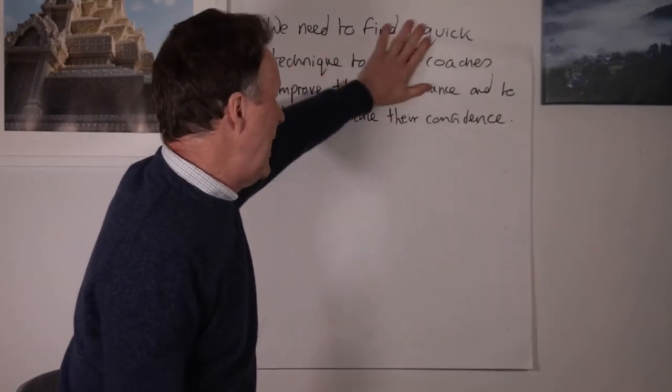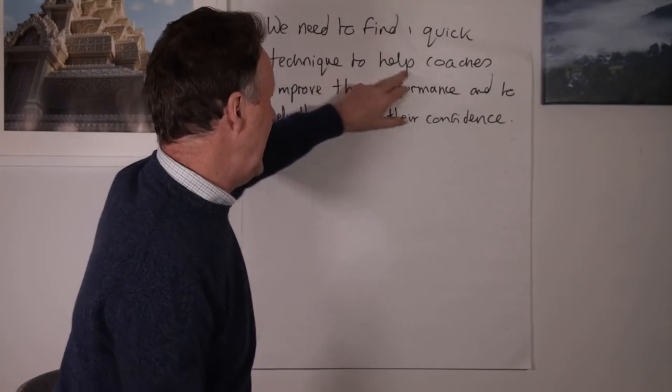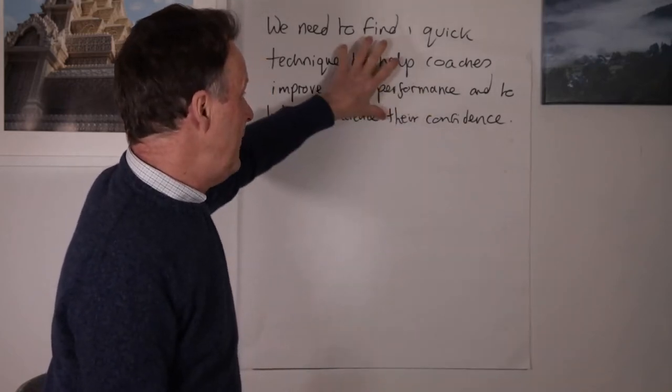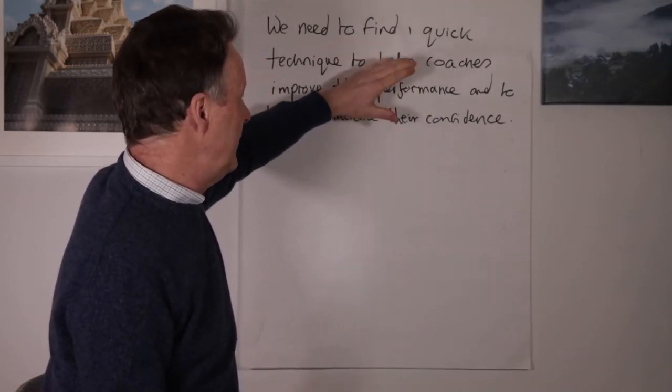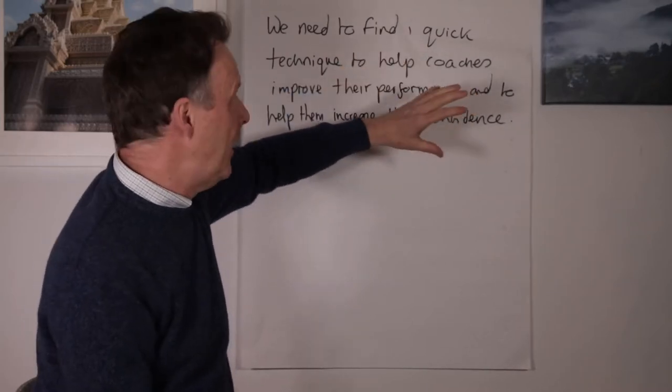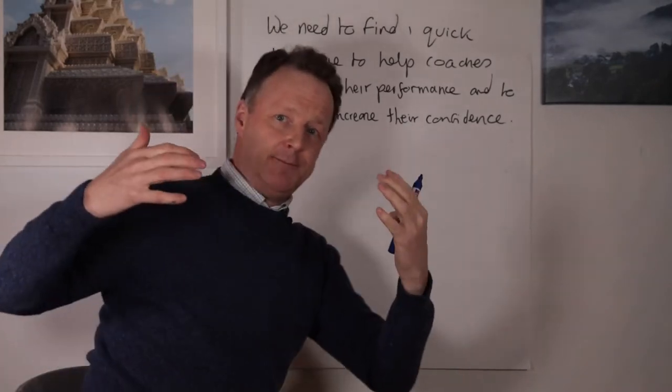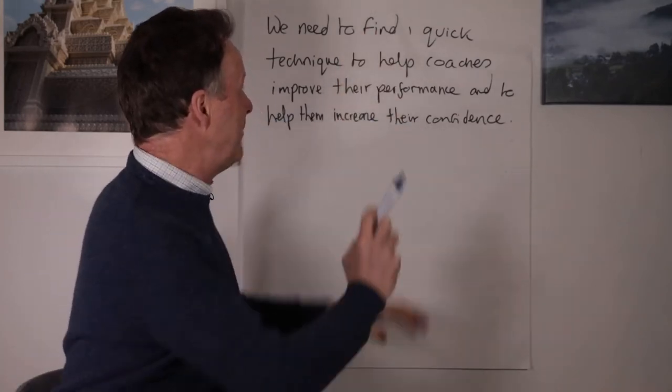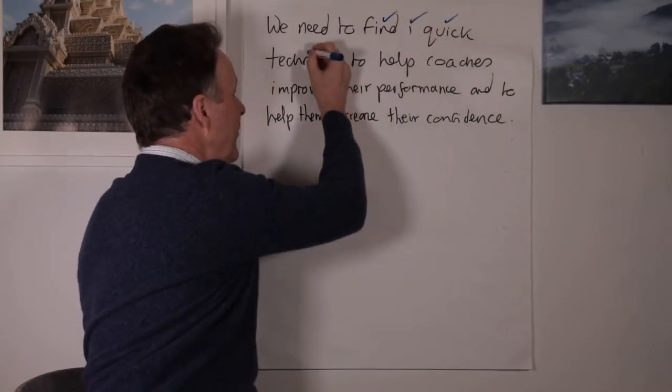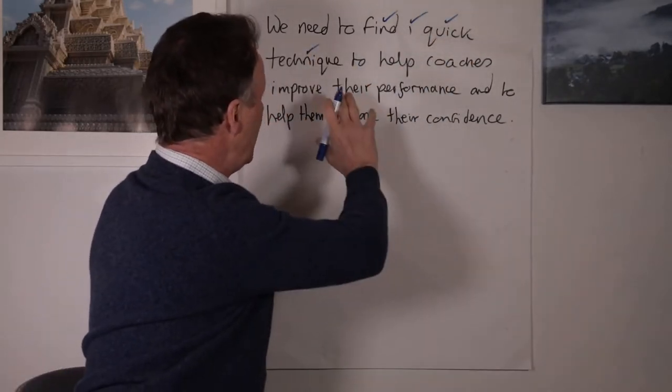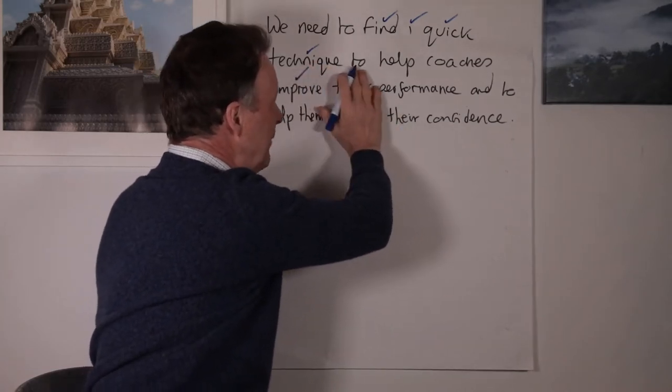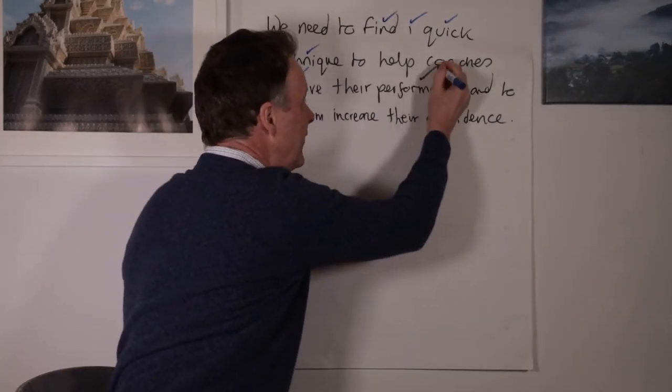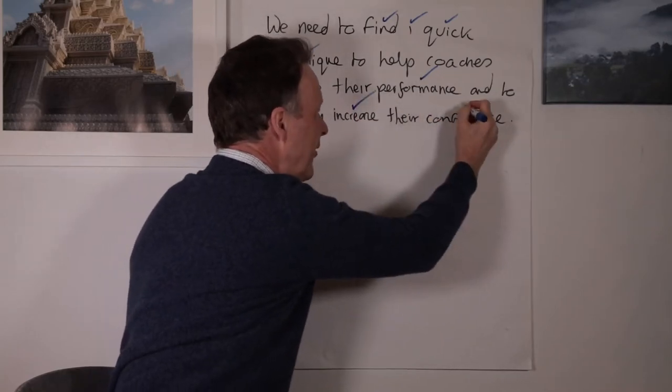Really simple and I'll explain how it works. So up here I have some information: we need to find one quick technique to help coaches improve their performance and to help them increase their confidence. Now if I was using previous generation note-taking, I might record that in sentences or in bullets. But switching to next generation note-taking there are four key steps. The first one is a deep filter. So what I do is I'm searching for all what I consider to be the important information and everything else I filter out. I wouldn't keep 'to help coaches' because by default I know that's what this is about. Improve performance, I'd keep that. 'And to help them' unnecessary, don't need that. Increase confidence, I'd keep those.